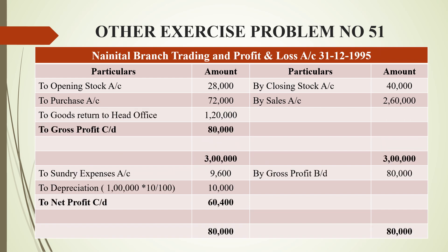For the Nanitel branch trading account: on the debit side, opening stock is 28,000, purchases are 72,000, and goods returned to head office are 1,20,000. On the credit side, closing stock is 40,000 and sales are 2,60,000. The balancing figure gives a gross profit of 80,000 rupees, with a grand total of 3,00,000 on both sides.